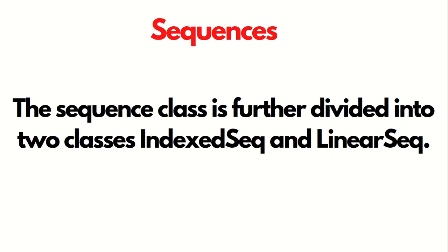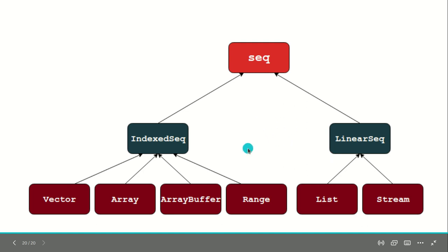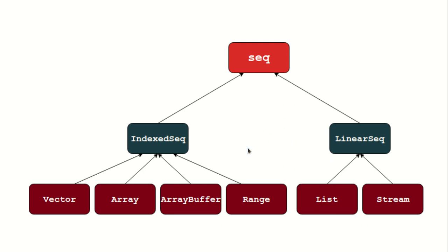Before we go to the demonstration, let's talk about sequences. The collections topic I'll be dividing into two or three videos because it's an important topic — we've just started with the introduction. The sequence class is further divided into two subclasses: index SEQ and linear SEQ. We have index SEQ with vector, array, array buffer, range, and linear SEQ with list and stream. The collections of the linear sequence class have efficient head and tail operations, whereas index SEQ collections have efficient apply and length operations.